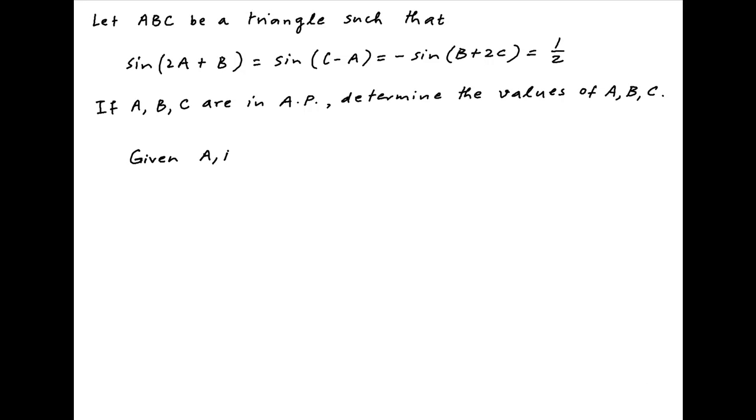We are given that angles A, B, and C are in arithmetic progression. So let's assume that angle A is equal to P minus Q, angle B is equal to P, and angle C is equal to P plus Q.